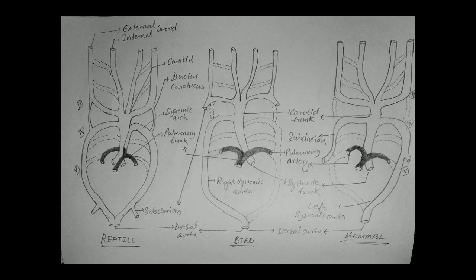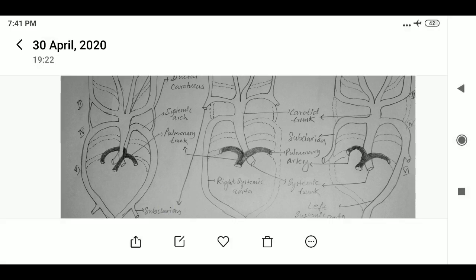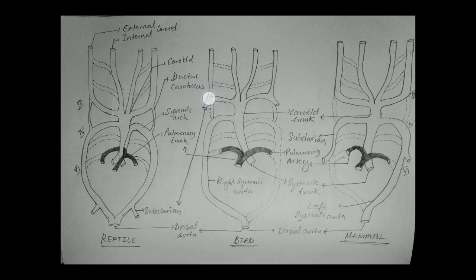Radix is also present and the dorsal aorta is a continuation. The remaining part of the systemic arch, represented by the subclavian artery, is present on the left side in birds and the right side in mammals. In the diagram, the subclavian in birds is labeled on both sides and in mammals it is visible on the right.